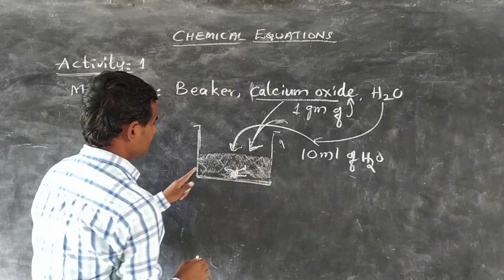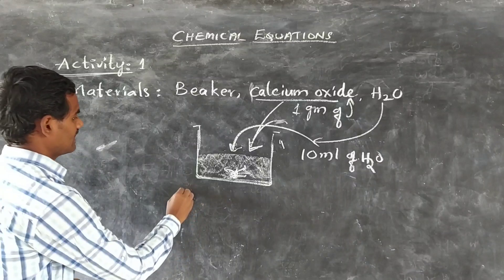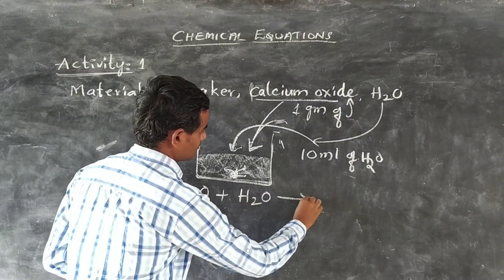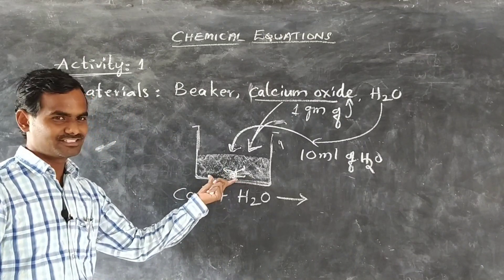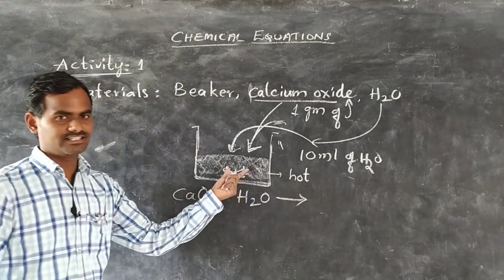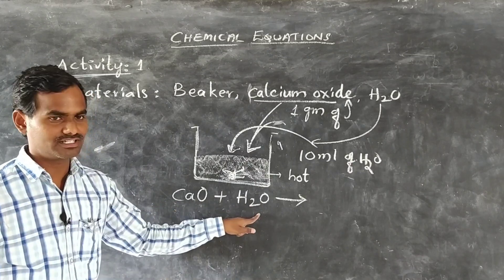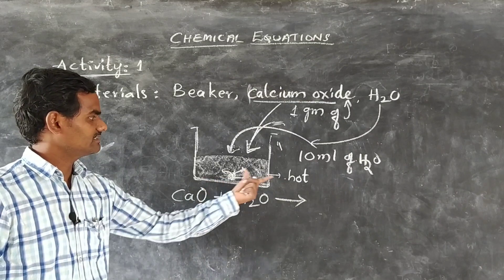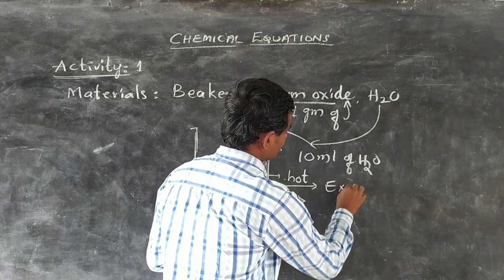When we observe this — calcium oxide dissolves in water and there is a reaction between calcium oxide and water. When we touch this beaker, it becomes hot. It means heat is released in this reaction. When calcium oxide reacts with water, heat is released. This is an exothermic reaction.